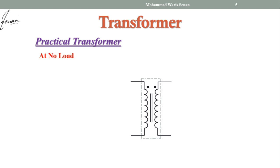We add copper loss using resistance, since all active power losses are represented by resistance. The primary resistance R1 represents copper loss in the primary winding and R2 represents copper loss in the secondary winding. In a practical transformer leakage flux is also present, so we represent leakage flux by leakage reactance. X1 is the leakage reactance of the primary side and X2 is the leakage reactance of the secondary side.